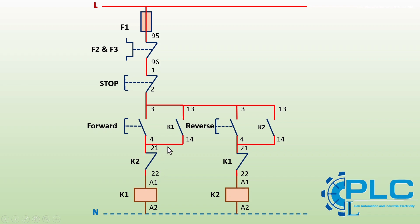In the second part of this circuit, which controls the motor's reverse rotation, the reverse start push button and its holding auxiliary contact are connected to the input of the normally closed auxiliary contact of the forward contactor. The output of this normally closed contact is then connected to the coil of the reverse contactor. This contact also acts as an interlock, ensuring that whenever the forward contactor is active, the reverse contactor cannot be energized. This prevents short circuits and ensures safe operation.